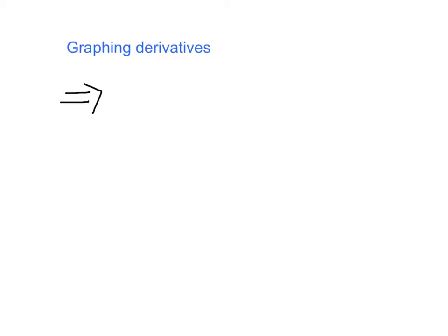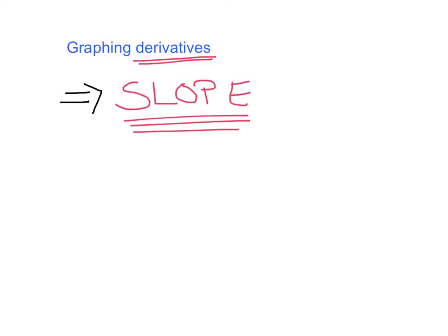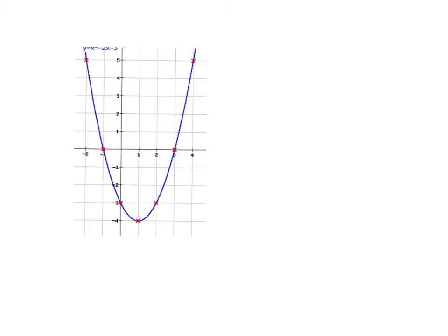Another big part we'll deal with is being able to graph derivatives. Derivative is just another word for slope, so when we say graph the derivative, we are really making a graph of slopes. We're given a nice quadratic here, and I want you to picture a bunch of tangent lines. The easiest slope to start with is always a slope of zero. Where can you put a tangent line so it has a slope of zero? A slope of zero is a horizontal line, so I put one right at the bottom of the parabola. That was when x equals one, so I plot zero on my axis.